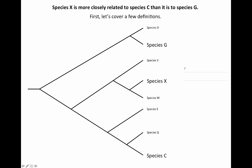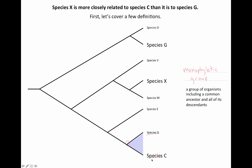One more key term is a monophyletic group. This one's a little bit more complicated. A monophyletic group is a group of organisms including a common ancestor and all of its descendants. Let's think about an example. If we go down here to the bottom of the tree, I see that this is a node — an ancestor — and all of the descendants of this node would include species Q and species C. So this is a monophyletic group.